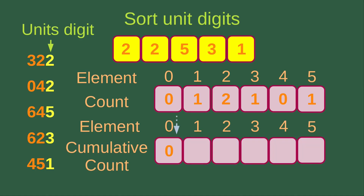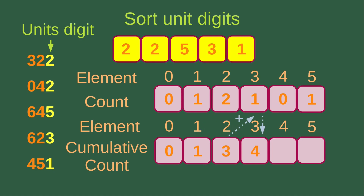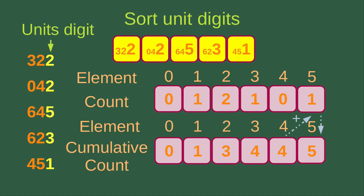After we have found out the number of counts for each of the digits, we can simply try to find out the cumulative counts for each of the digits. The 0 is simply having 0 cumulative count. When we want to find out the cumulative count for number 1, we simply add 0 by 1 to get 1 — we just add up the previous cumulative count with the current count value. For element 2, the cumulative count is 1 plus 2, giving 3. For element 3, it becomes 4 (equal to 3 plus 1). For element 4, the cumulative count stays at 4 (4 plus 0). And for element 5, the cumulative count becomes 5 (4 plus 1).